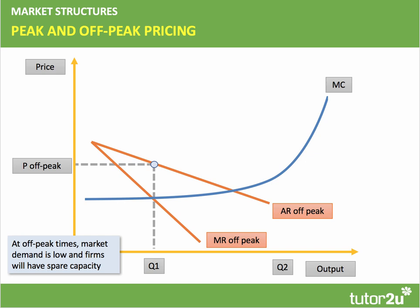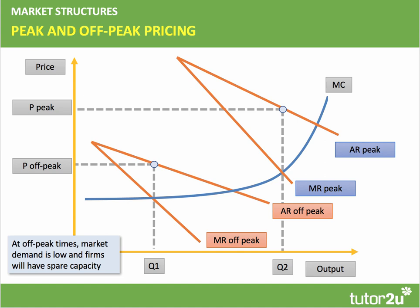Another type of discrimination is peak and off-peak pricing, where the price difference partly reflects cost and spare capacity. At off-peak times demand is relatively low and suppliers have spare capacity — cinemas are emptier during the daytime, likewise restaurants. The profit-maximizing off-peak price is lower, while at peak times demand is higher and more inelastic, so a higher peak price is charged. Partly this reflects higher marginal cost at peak times — for example, paying overtime or hiring temporary labour to cope with peak demand.